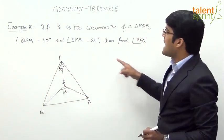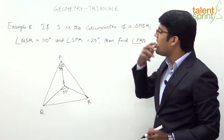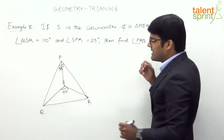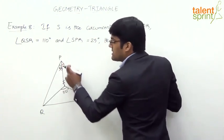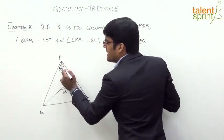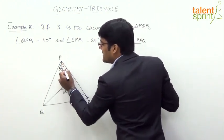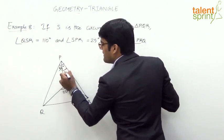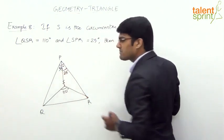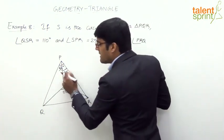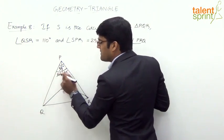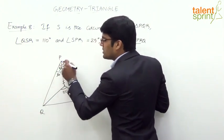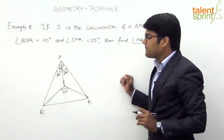The next point: angle SPR is 25 degrees. The total angle P is 55 degrees, but this part — angle SPR — is 25 degrees. So the remaining part must be 30 degrees, because 25 plus 30 makes the total angle 55 degrees.